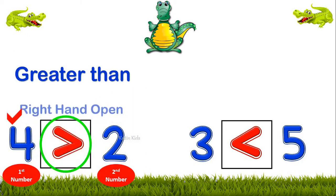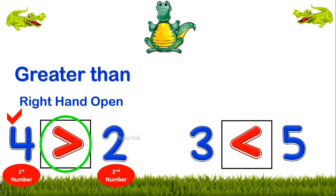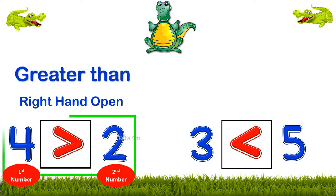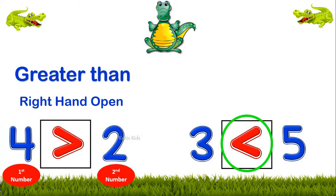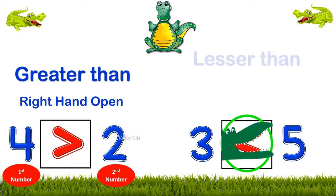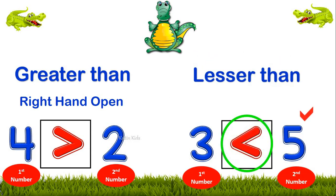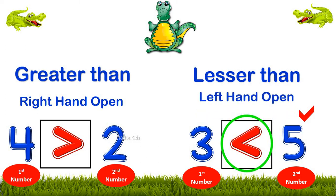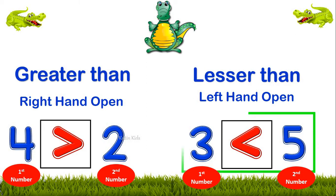Greater than sign means the mouth of the alligator is open towards the bigger number. This sign we can create by using the index finger and the thumb of the right hand, and it is read as '4 is greater than 2.' And this sign is the less than sign, where the mouth is open towards the bigger number. For this, we use the left hand index finger and the thumb, and it is read as '3 is less than 5.'